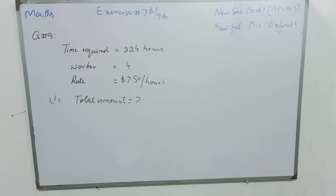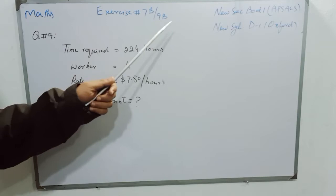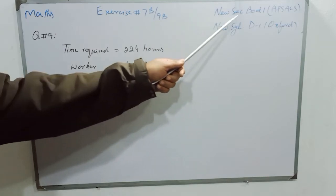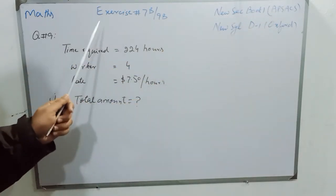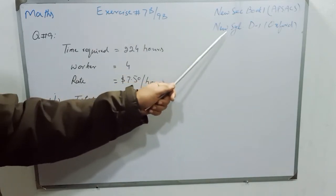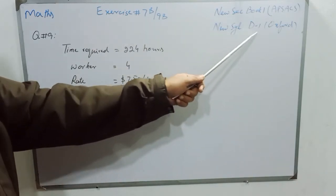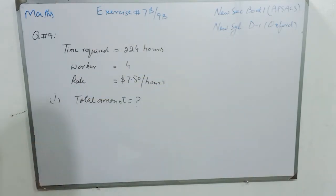Starting with the name of Allah Almighty, who is the master of the Day of Judgment, and a bundle of Durood upon Prophet Muhammad (sallallahu alaihi wa sallam). Dear students, Mathematics Exercise 7B for New Scanty Mathematics Book 1, Class 6. And Exercise 9B for New Scanty Mathematics D1 for senior-level students. Question 9 is: